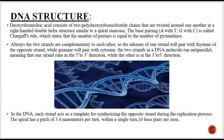DNA structure. Deoxyribonucleic acid consists of two polydeoxyribonucleotide chains twisted around one another in a right-handed double helix structure, similar to a spiral staircase. The base pairing — A with T and G with C — is called Chargaff's rule, which states that the number of purines equals the number of pyrimidines. The two strands are always complementary: adenine of one strand pairs with thymine of the opposite strand, while guanine pairs with cytosine.